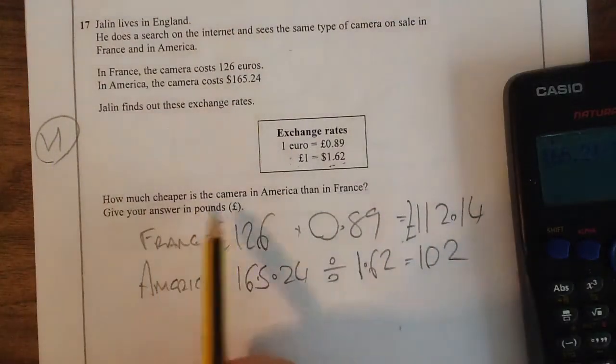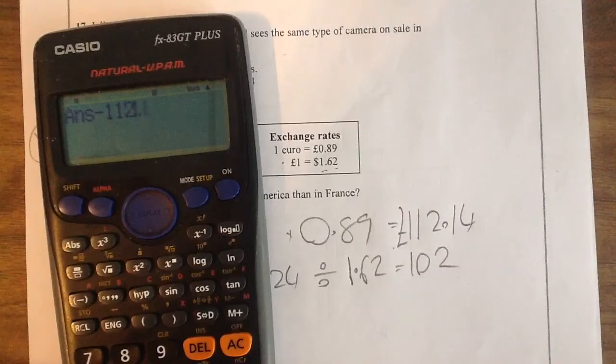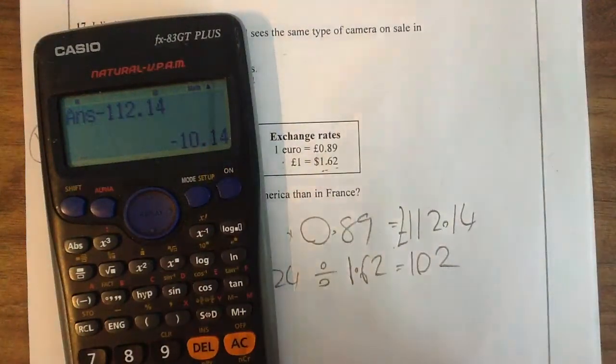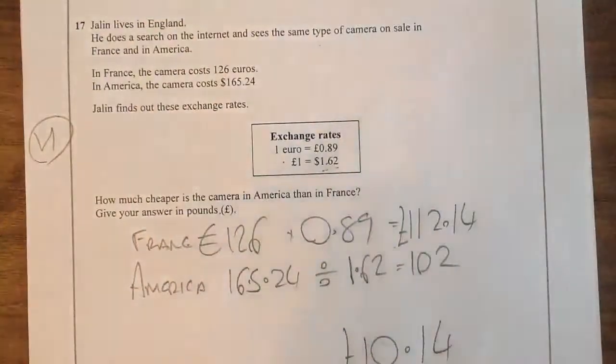Now it says how much cheaper, so we need to subtract them. I got a negative number because I typed it in my calculator the wrong way, but the answer is £10.14.